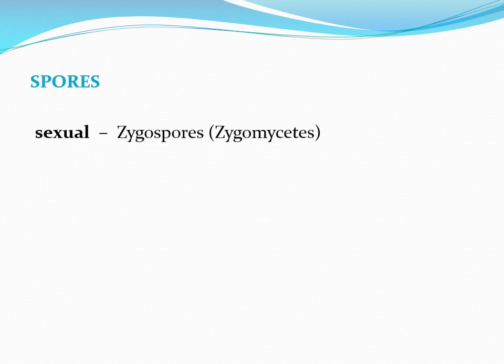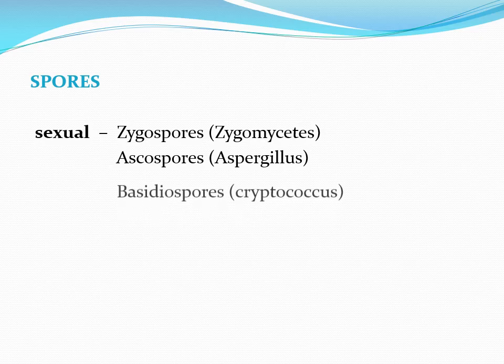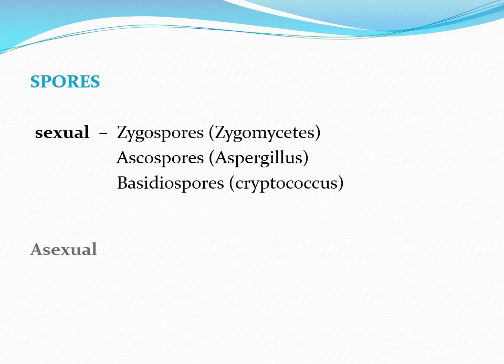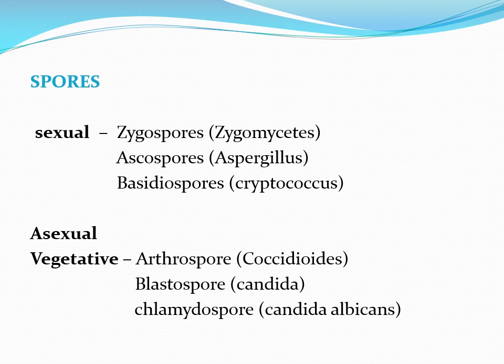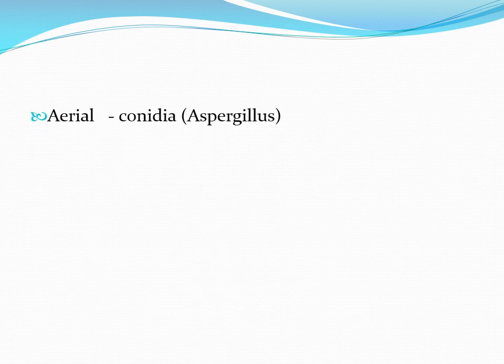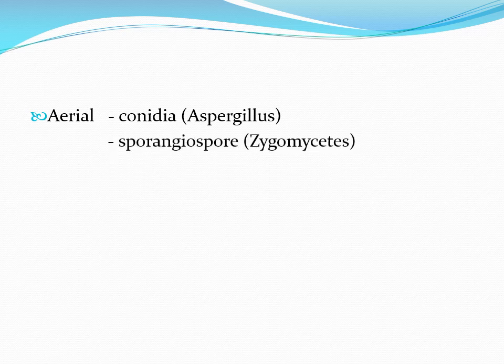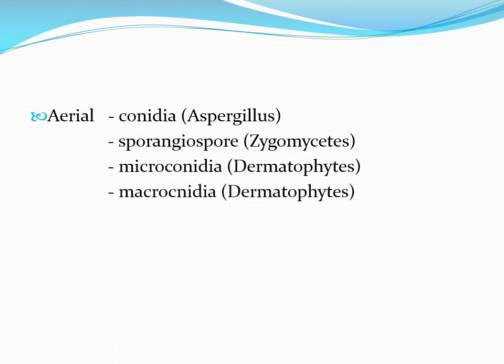Fungi reproduce by spores, which can be sexual or asexual. Sexual spores include zygospores produced by Zygomycetes, ascospores produced by Aspergillus, and basidiospores by Cryptococcus. Asexual spores include vegetative forms such as arthrospores from Coccidioides, blastospores and chlamydospores produced by Candida, and aerial asexual spores called conidia — including microconidia and macroconidia — produced by dermatophytes.